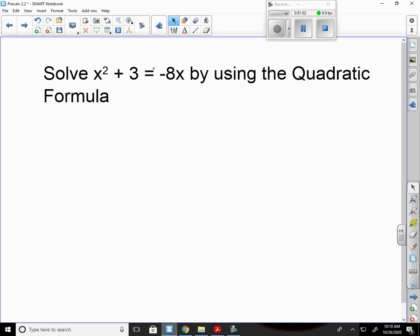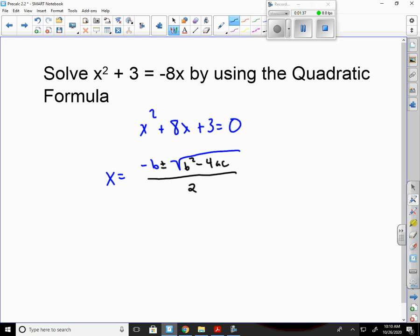So let's use the quadratic formula to solve this. The first thing I have to do is get everything on the same side. So that's x squared plus 8x plus 3 equals 0. Now, I actually use the formula x equals negative b plus or minus the square root of b squared minus 4ac all over 2a.